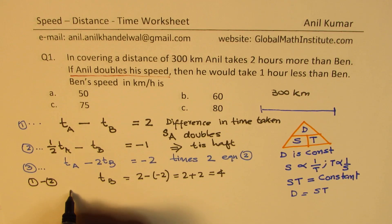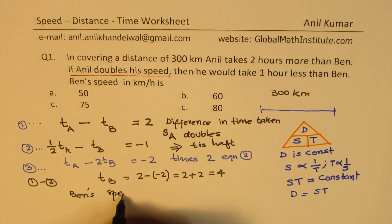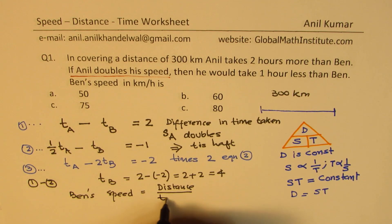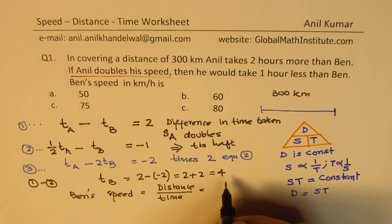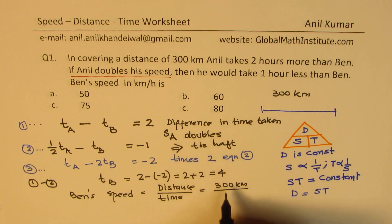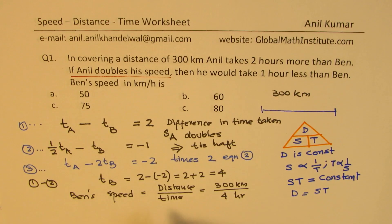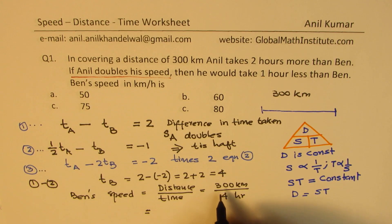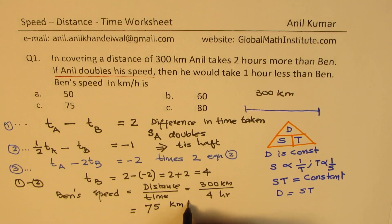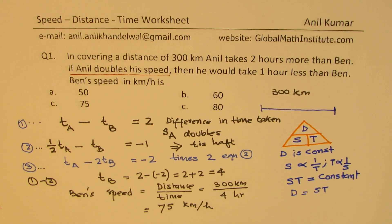We got Ben's time but we want Ben's speed. Speed equals distance over time. The distance is 300 kilometers and the time is 4 hours, so Ben's speed is 300 divided by 4, which is 75 kilometers per hour. So effectively it is just a few statements to the answer and takes very little time — this is the most effective way of answering such a question.